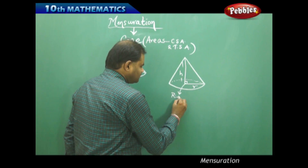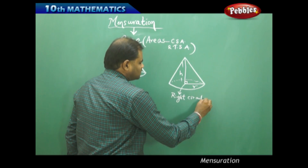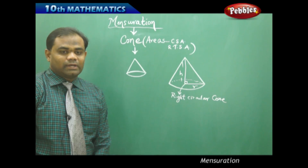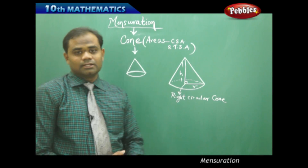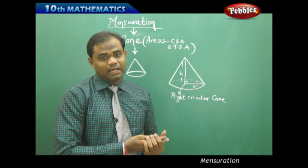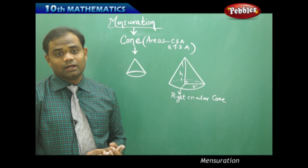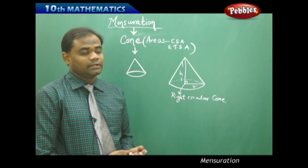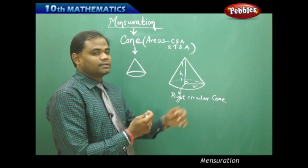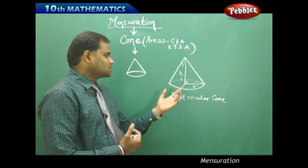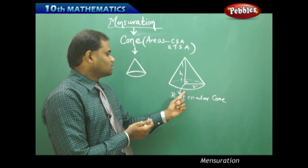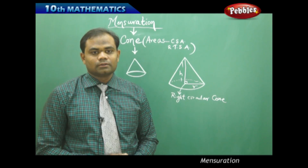Now, considering this in a similar manner as I have considered the cylinder, let me see what different faces it has for finding the curved surface area or the total surface area. The base is a circle and the upper part is a curved surface. Therefore this cone has two regions: one is the curved part on the top and the other is a circle at the bottom.